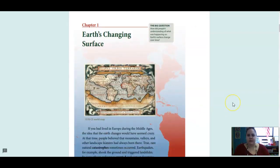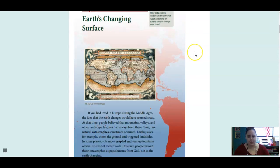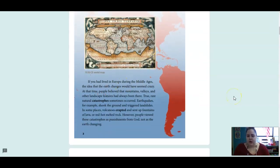So our first chapter today is called Earth's Changing Surface, and let's read our big question. So we're looking at how did people's understanding of what was happening on earth's surface change over time? If you had lived in Europe during the Middle Ages, the idea that the earth changes would probably have seemed crazy. At the time, people believed that mountains, valleys, and other landscape features had always been there. True, rare natural catastrophes sometimes occurred.